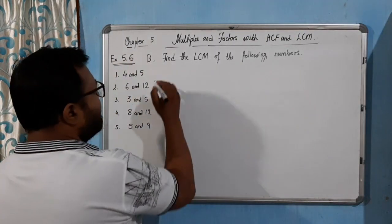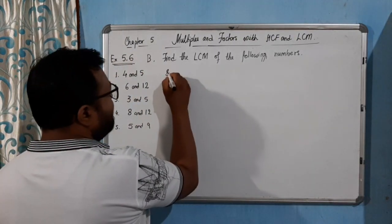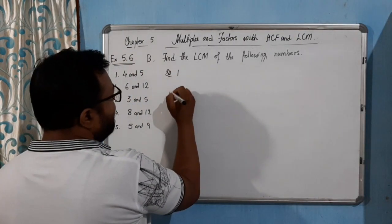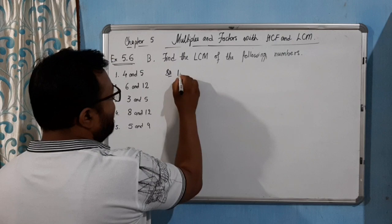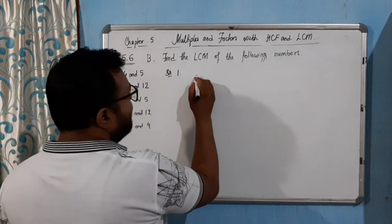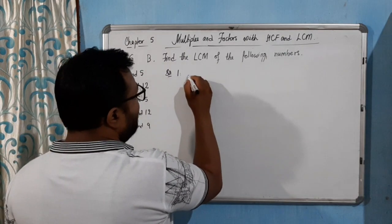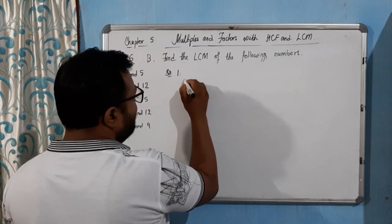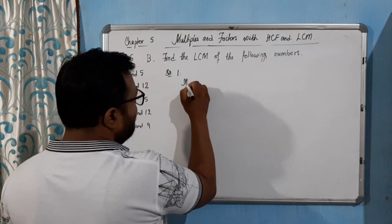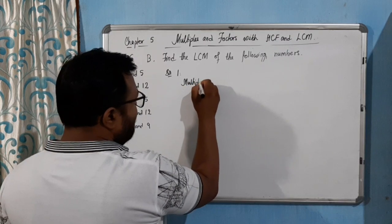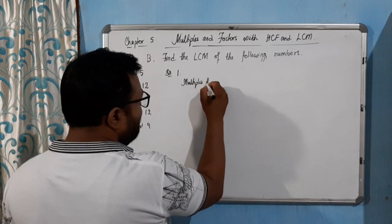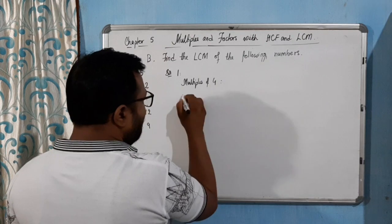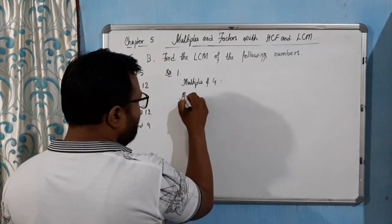For solution one, let me write the multiples here. Multiples of four, and also let me write the multiples of five, and then we will find the common multiple of four and five.